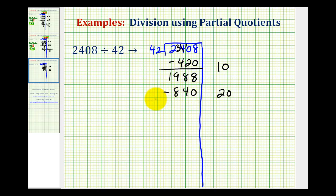Again, your partial quotients may be different, but when we sum them, we would get the same sum. So here we have 8, 4, 11. And now we can use another partial quotient of 20. 20 times 42 is 840. Subtract.